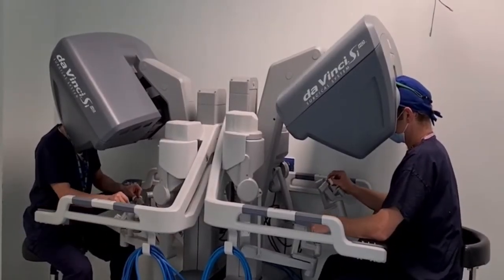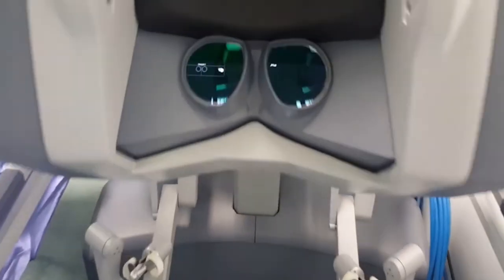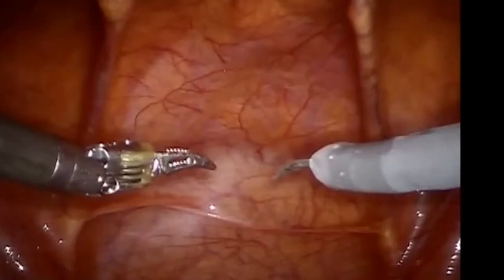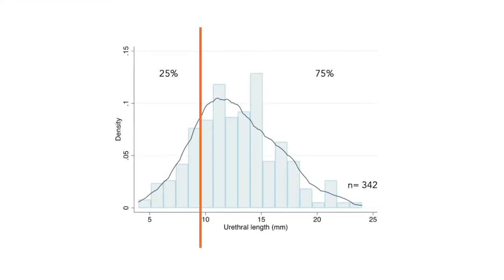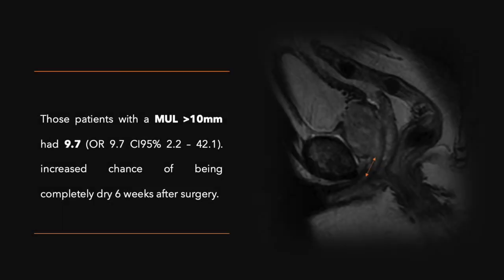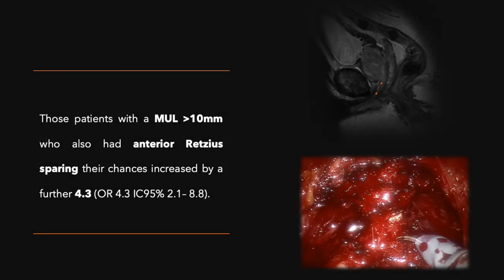We present the results of 342 patients that underwent robotic radical prostatectomy at our centre between January 2018 and October 2021. In our series, 75% of patients had a long urethra with an MUL over 10 mm. These patients had a 9.7 increased chance of being completely dry six weeks after surgery. Moreover, those patients with an MUL over 10 mm who also had an anterior recto-sparing approach had their chances of being dry six weeks after surgery increased by a further 4.3.